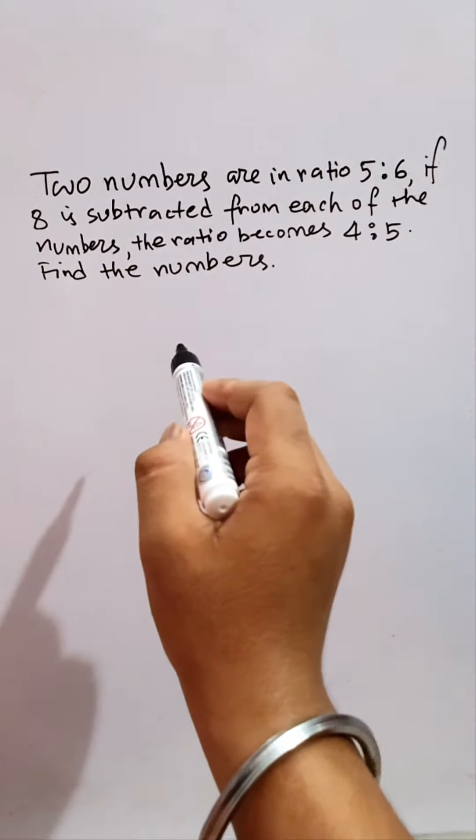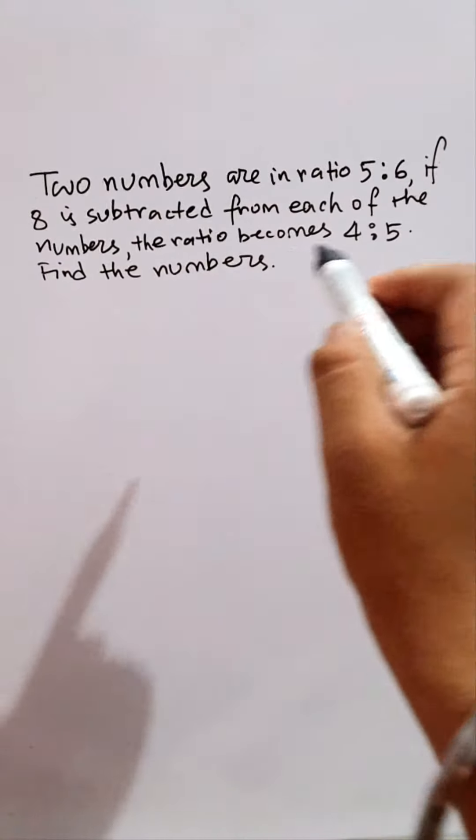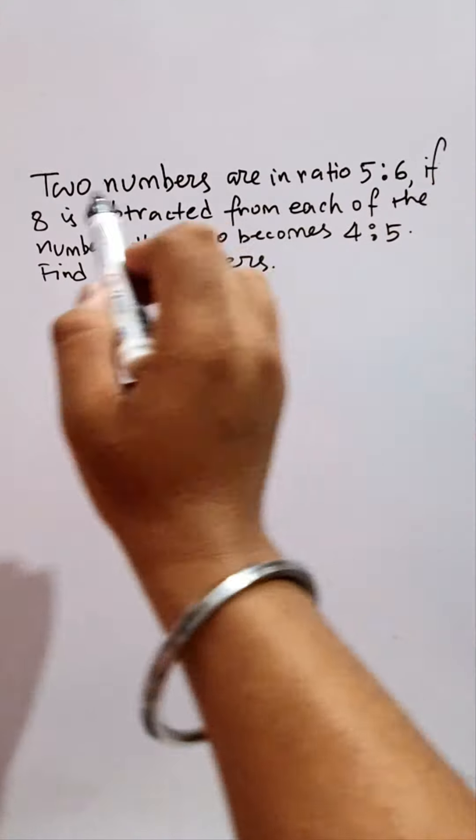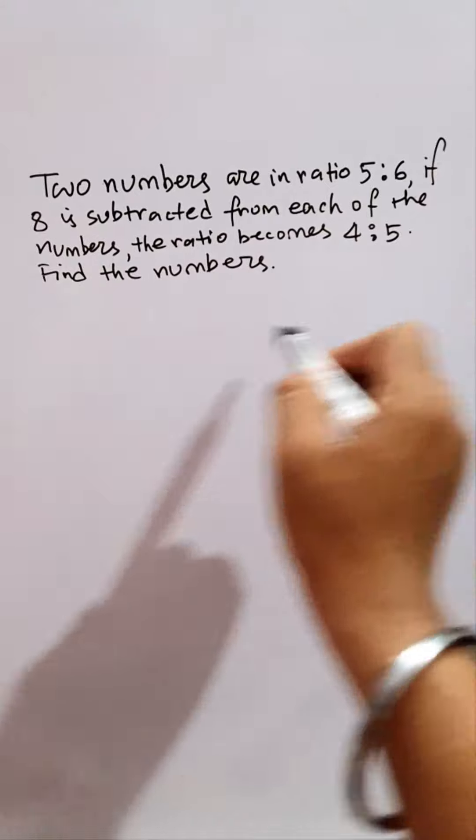We will explain some banking questions asked in competitive exams. Two numbers are in ratio 5 is to 6. If 8 is subtracted from each of the numbers, the ratio becomes 4 is to 5. Now find the numbers.